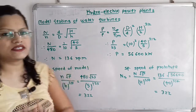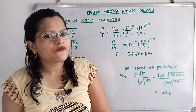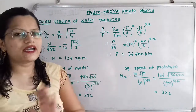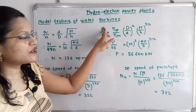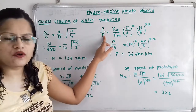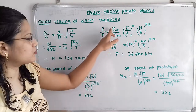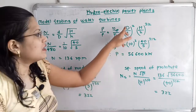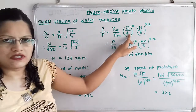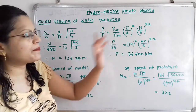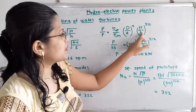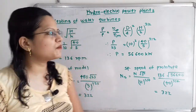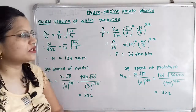So capital N equals 136 RPM. Now we will calculate the power of the prototype. The formula is: power of prototype capital P divided by power of model small p equals the efficiency of prototype divided by efficiency of model, multiplied by (capital D divided by small d) squared, multiplied by (capital H divided by small h) raised to 3/2. Since the efficiency of model and prototype is the same, this ratio is 1.